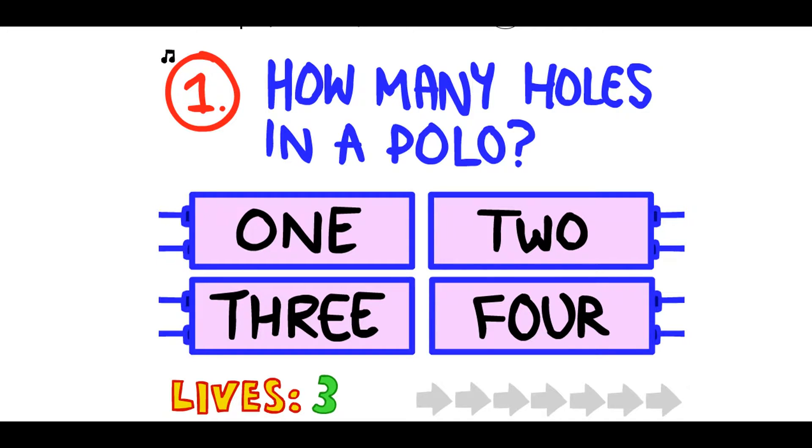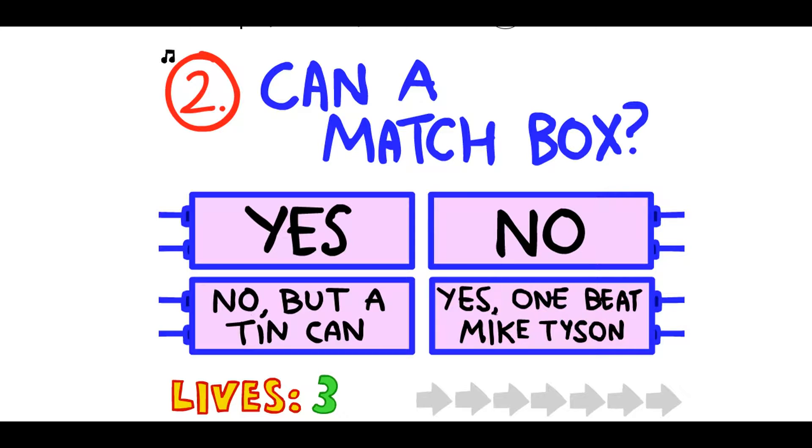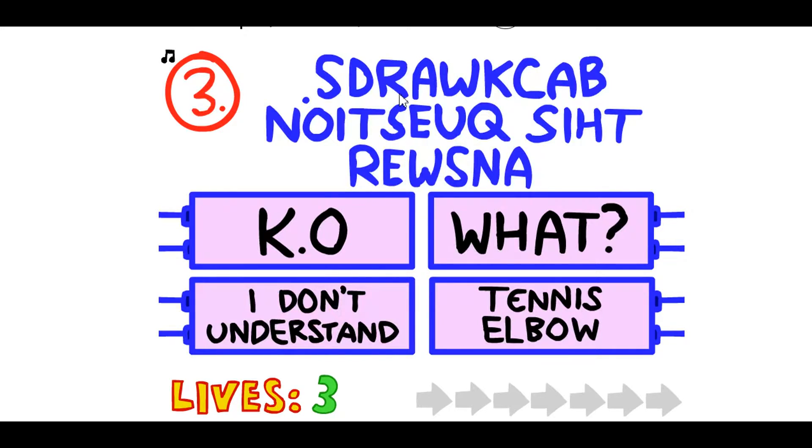So guys, Green at Night and also Blue Night here, making another video today. We're doing the Impossible Quiz, so let's start. How many holes in a polo? That's easy, four. Can I can a match box? No, but those were random guesses.